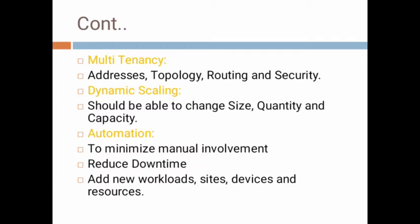Addresses means it is an identifier for a node or a host on a telecommunication network; it has a unique identifier across networks. Next, topology means the arrangement of computer systems in a network, and we know about its five types: mesh, star, bus, ring and hybrid.